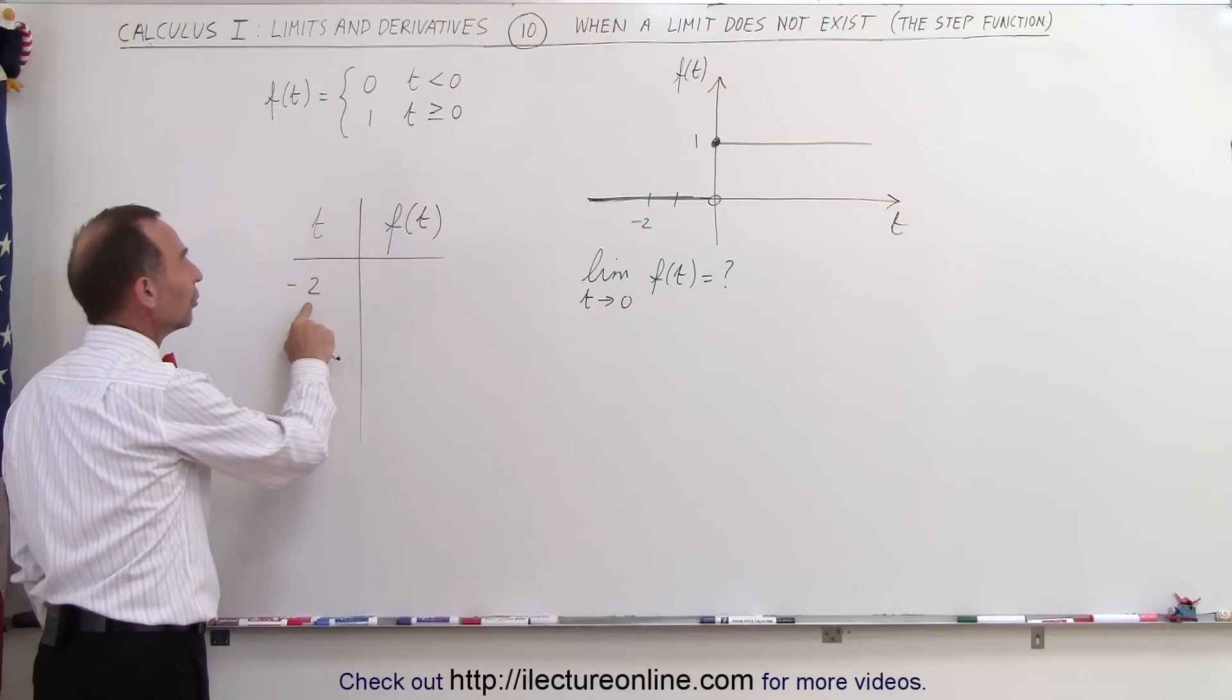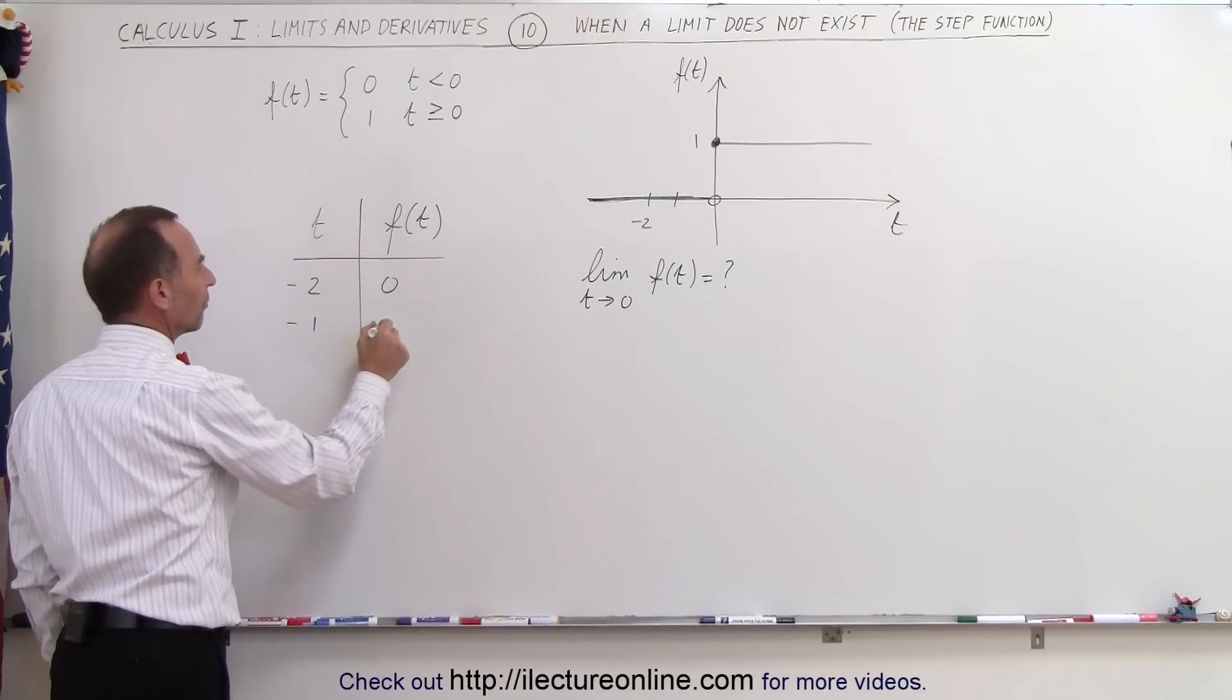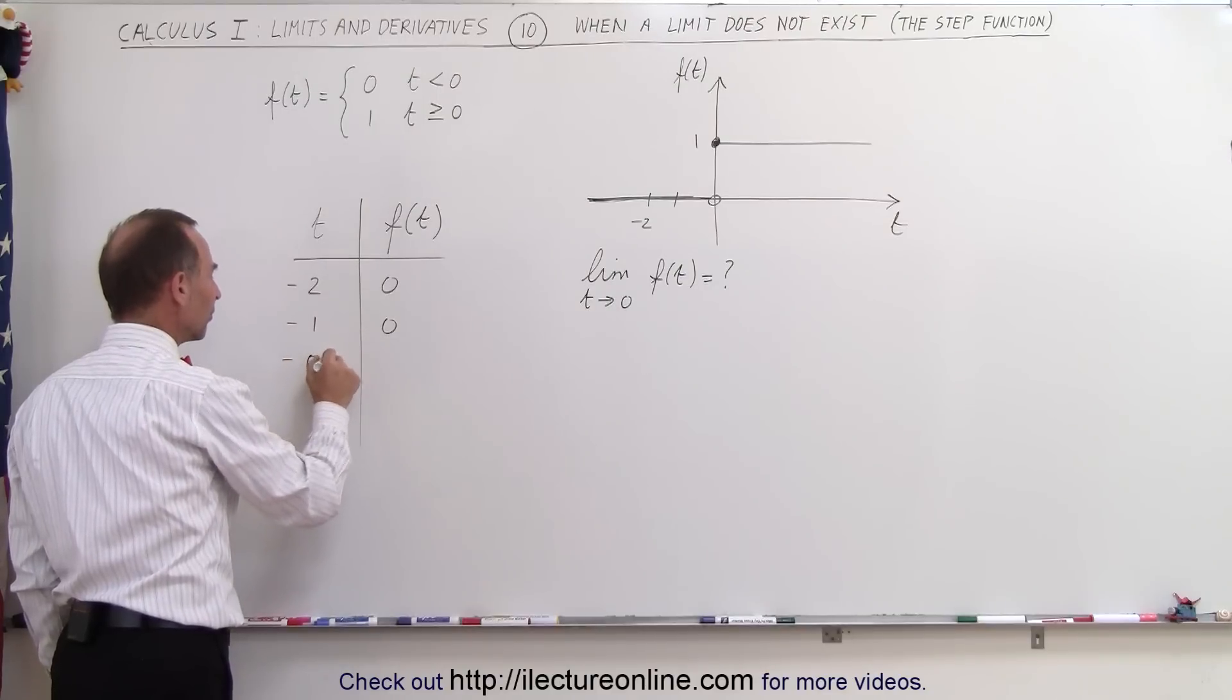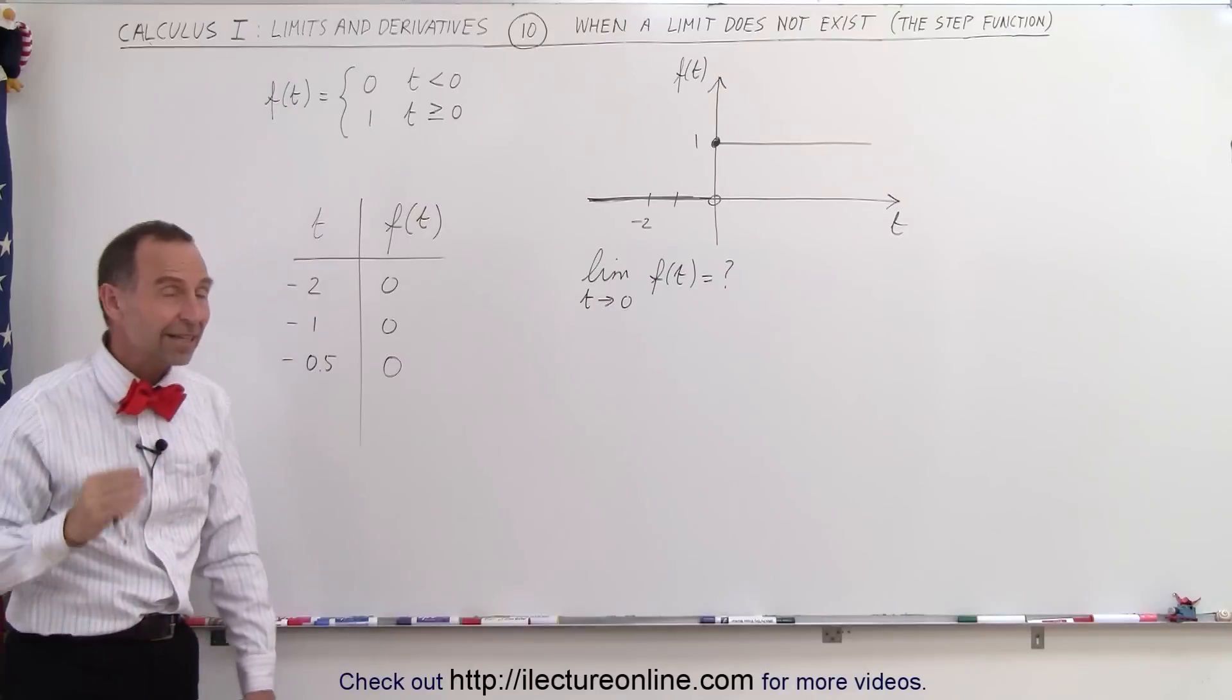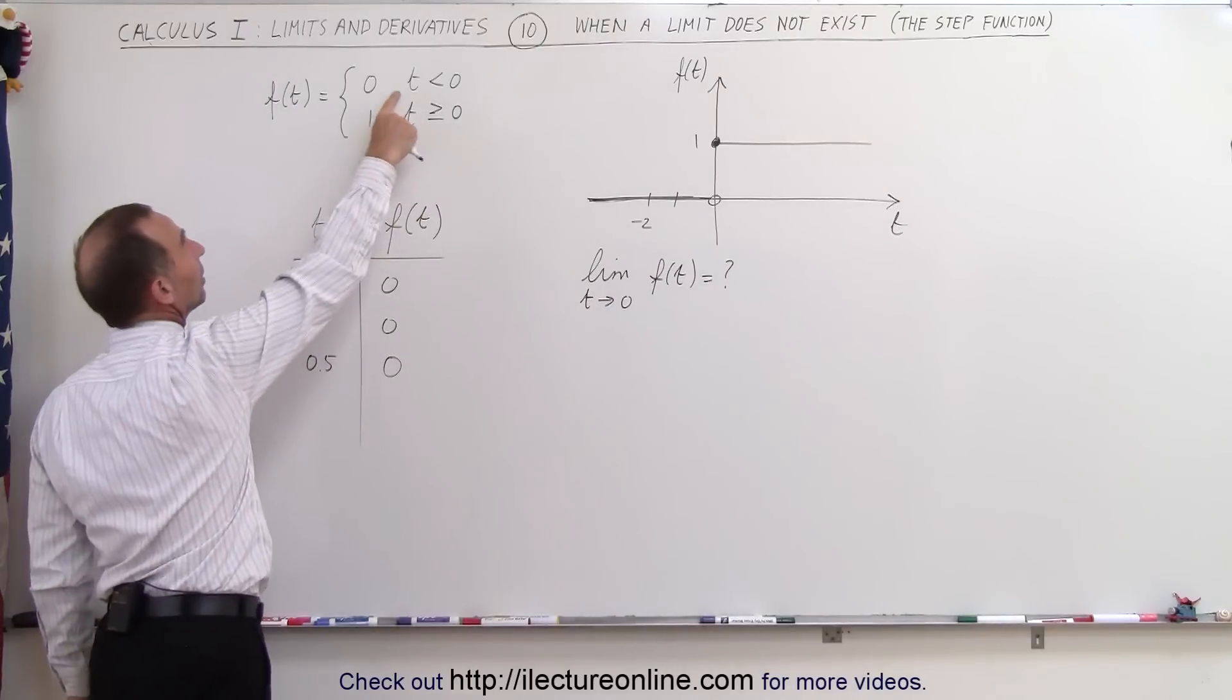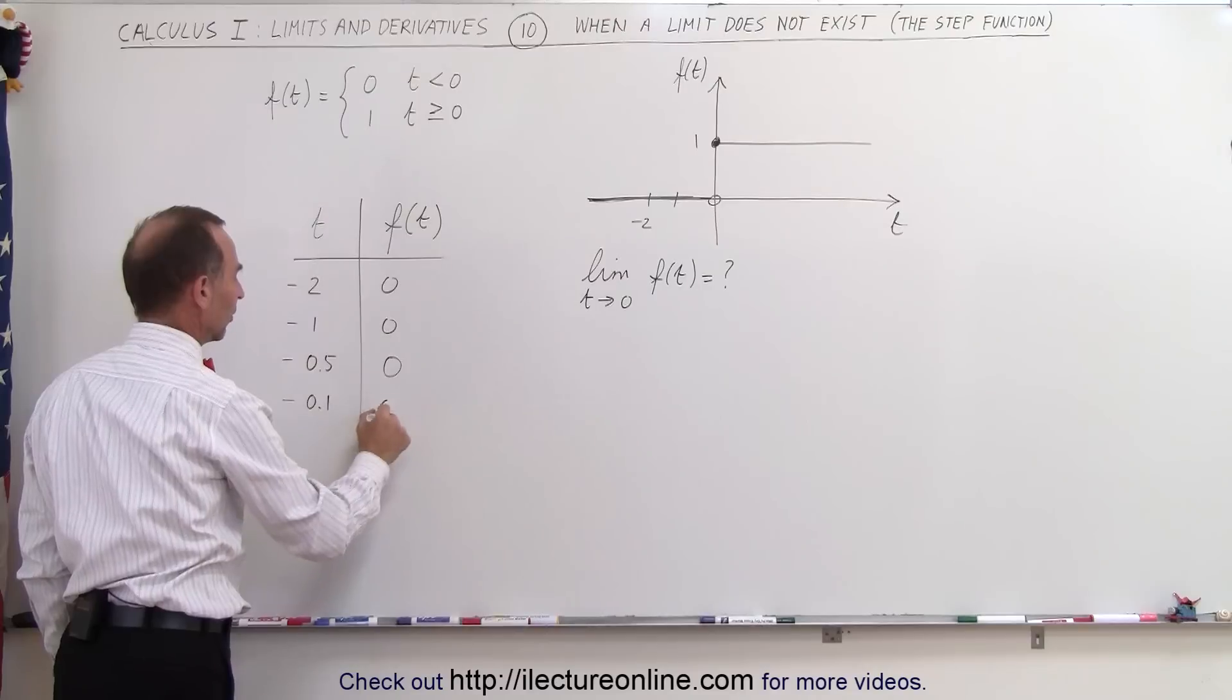When t is equal to negative 2, the function is equal to 0. When t is equal to negative 1, the function is equal to 0. When t is equal to negative 0.5, the function is still equal to 0 because as long as the value for t is less than 0, the function is equal to 0. How about negative 0.1? Still 0.